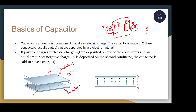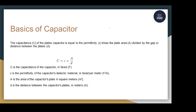If we look at a parallel plate capacitor in this diagram, you can notice the distance between the two parallel plates is D. D is the distance, VA is the potential at plate A, and VB is the potential at plate B. There is an electric field created between the two parallel plates. Capacitance is the property with which the capacitor stores charges.